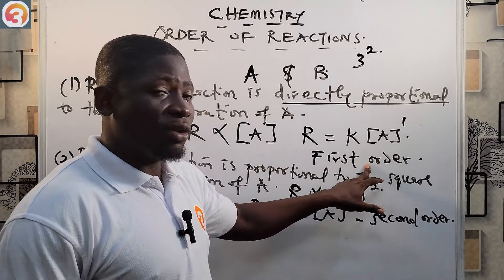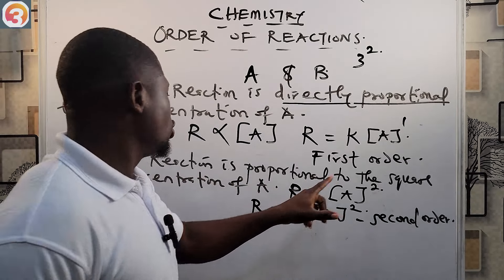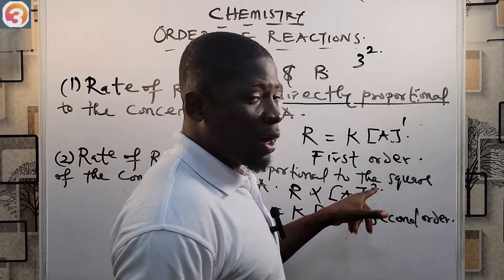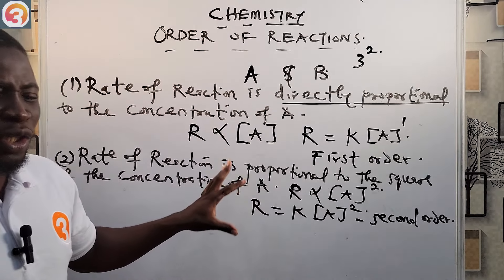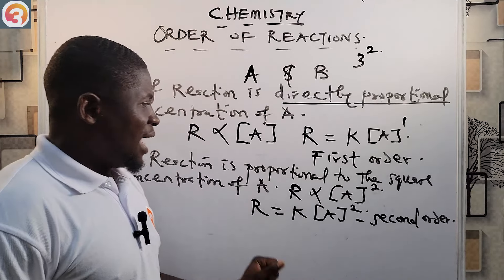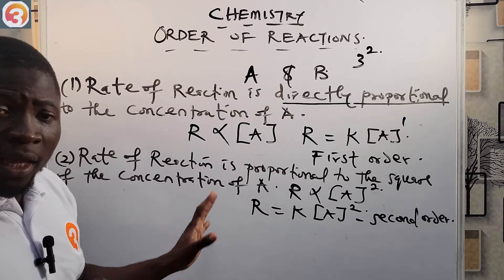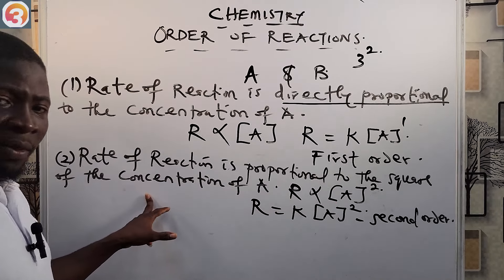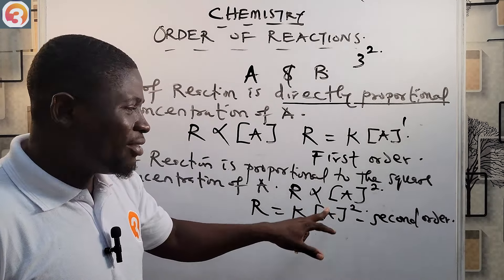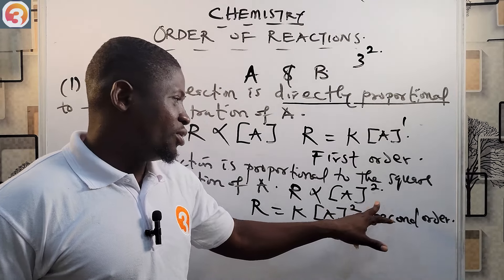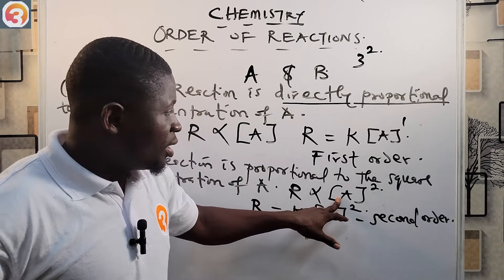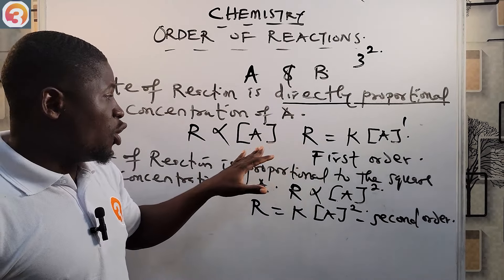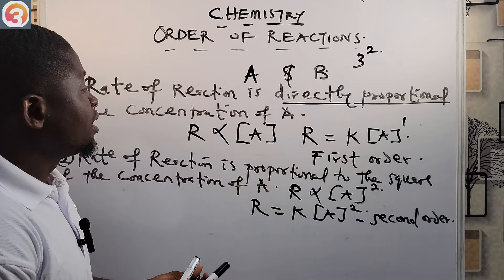Mathematically, R is directly proportional to [A]², and removing the proportionality sign gives R = k[A]². This shows that the equation is second order with respect to A, because there is a power of two on top of the concentration of A.